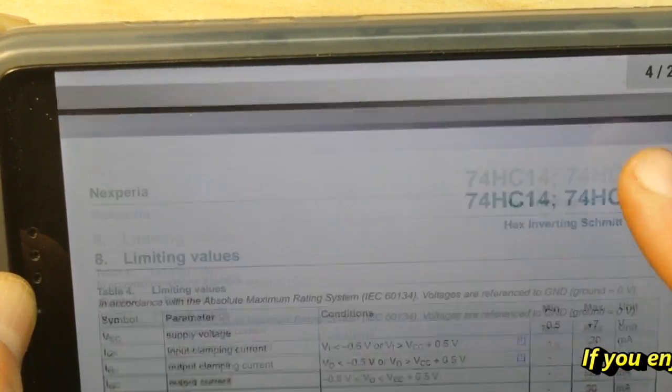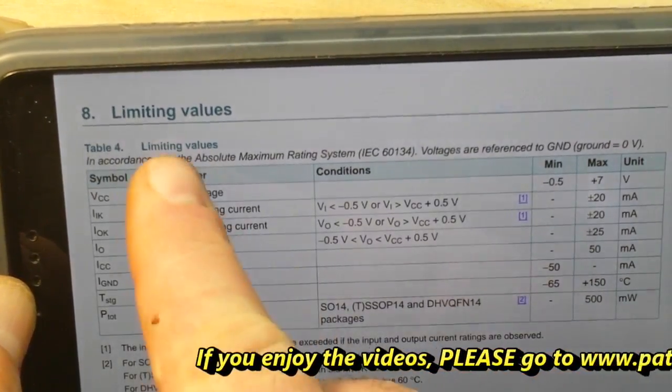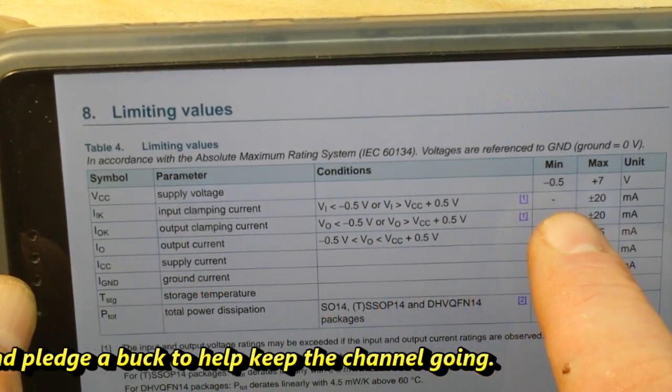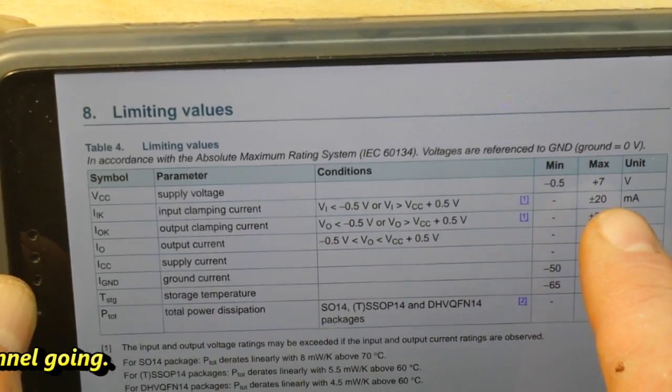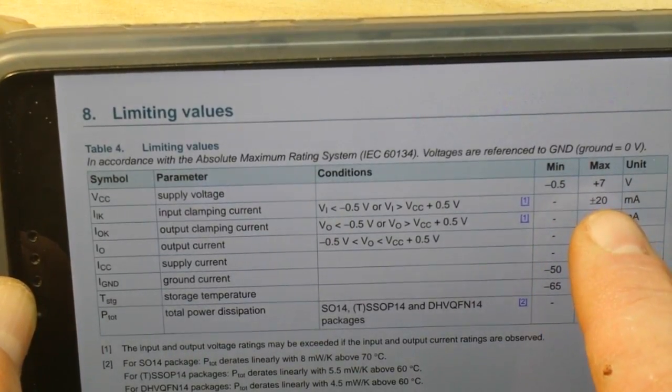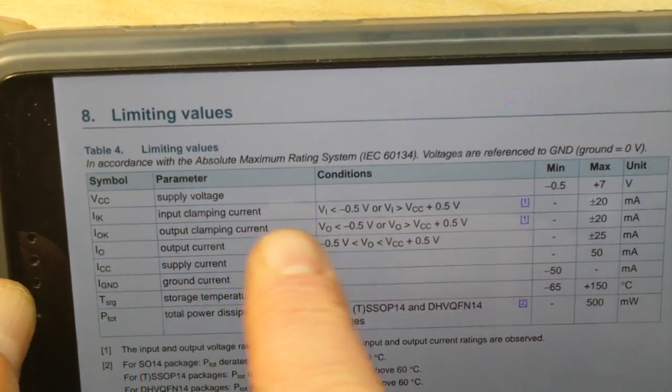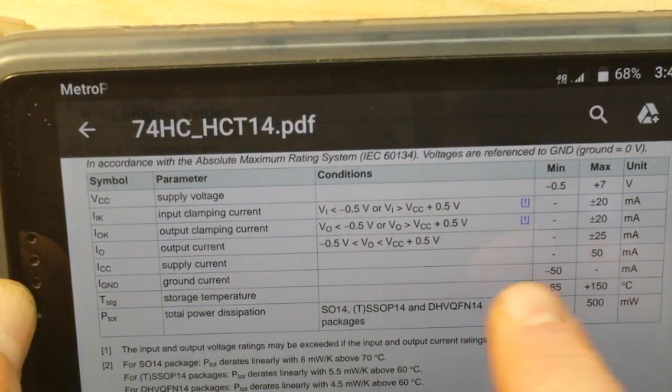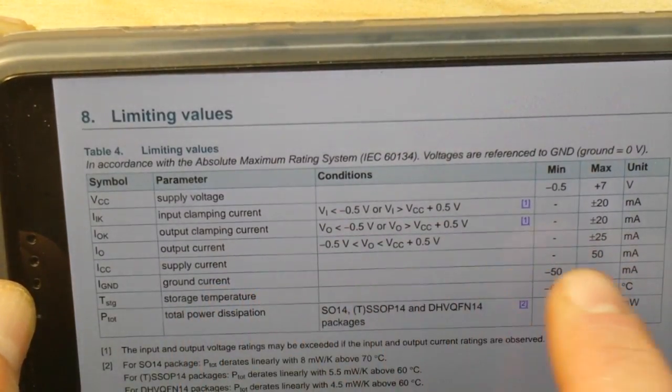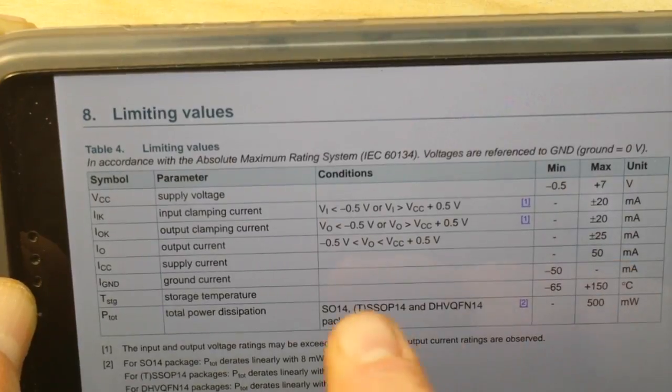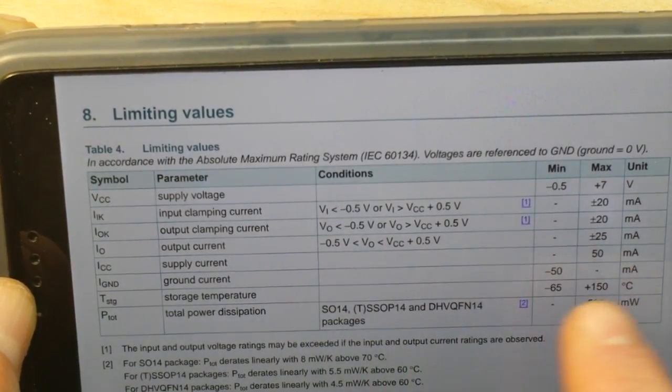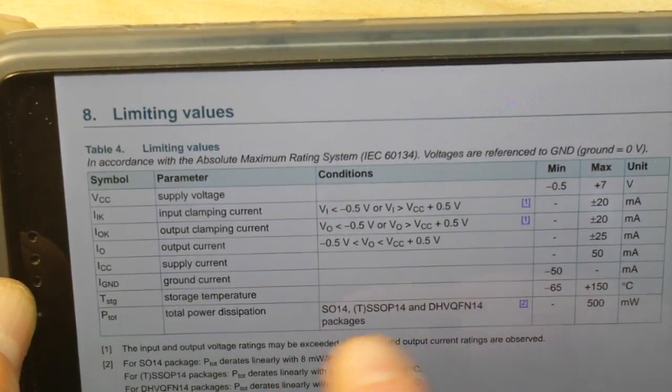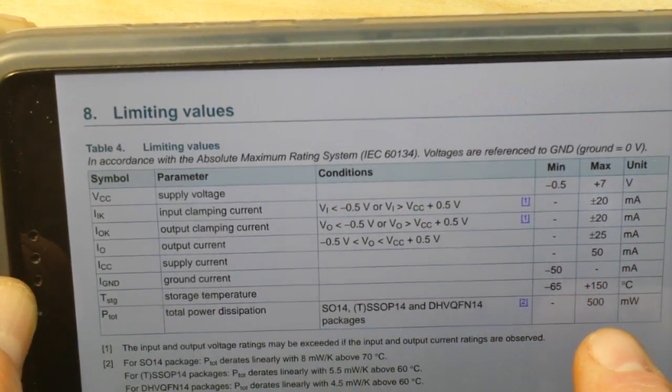Even though VCC is I think up to positive six volts, that makes it nice so we can interface with things that are much higher. Applications: wave and pulse shapers, astable multivibrators, monostable multivibrators. Coming down here to the important stuff: limiting values, VCC supply voltage minimum negative 0.5 volts, maximum oh okay it's seven volts. Input clamping current plus or minus 20 milliamps, output clamping current plus or minus 20 milliamps, output current plus minus 25 milliamps, supply current 50 milliamps.